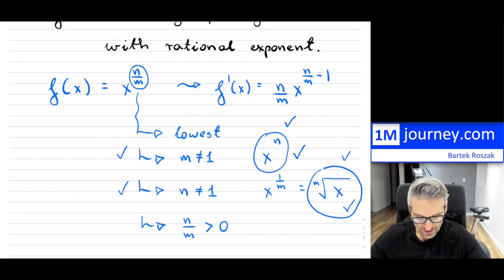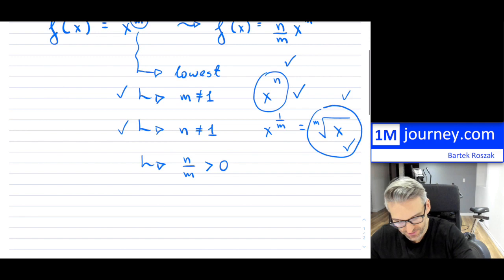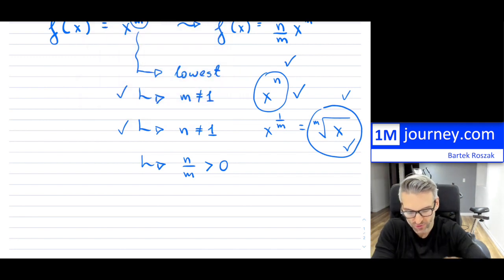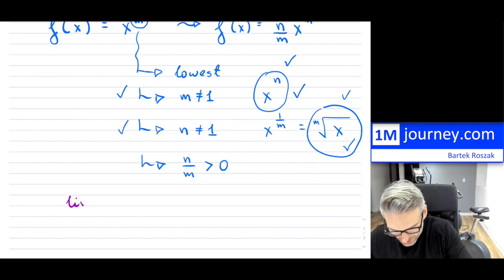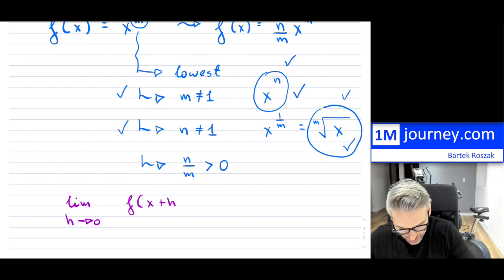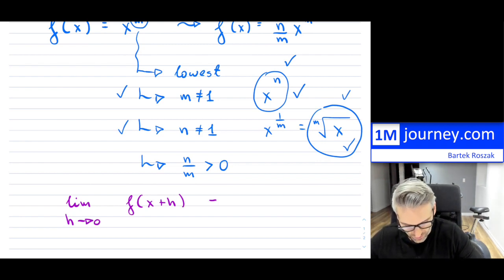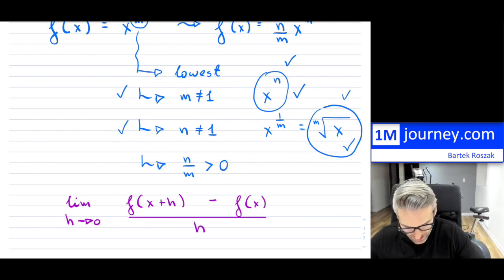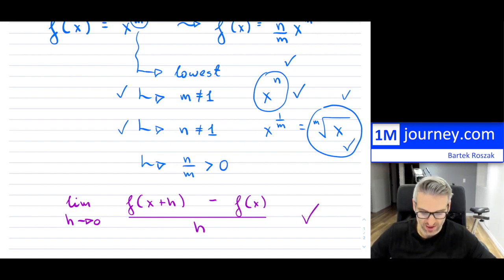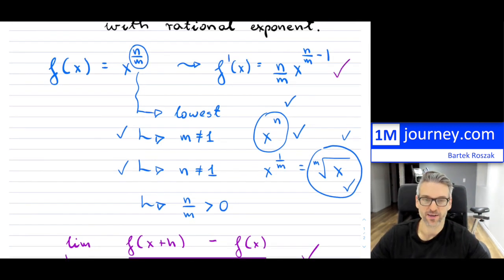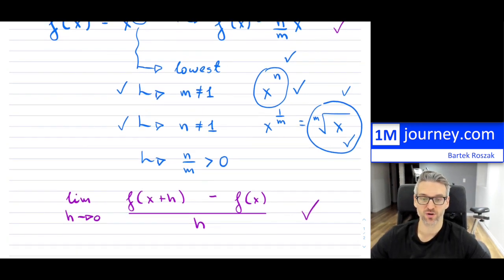So all of that being said, how will we prove this? First, I hope you remember the definition of the derivative by first principles: the limit as h approaches 0 of f(x+h) minus f(x), all divided by h. We don't want to keep doing this from scratch, so we want a nice mnemonic for the derivative.